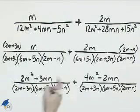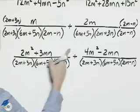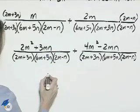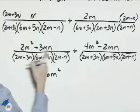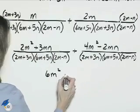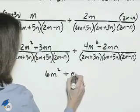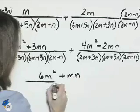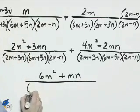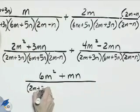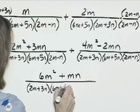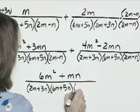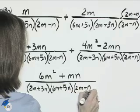We'll put the like terms together in the new numerator. 2m squared plus 4m squared is 6m squared. Positive 3mn and minus 2mn is plus mn. The denominator, 2m plus 3n times the quantity 6m plus 5n times the quantity 2m minus n.